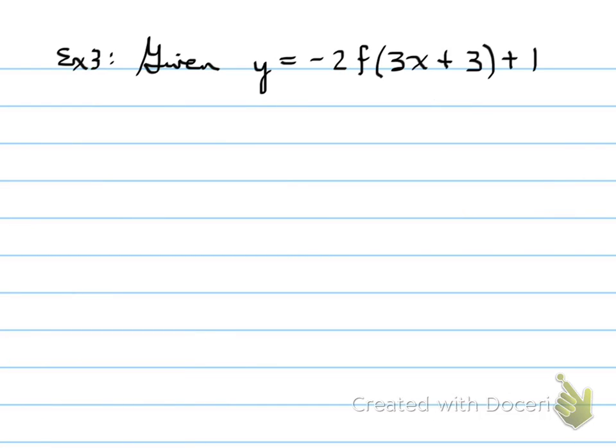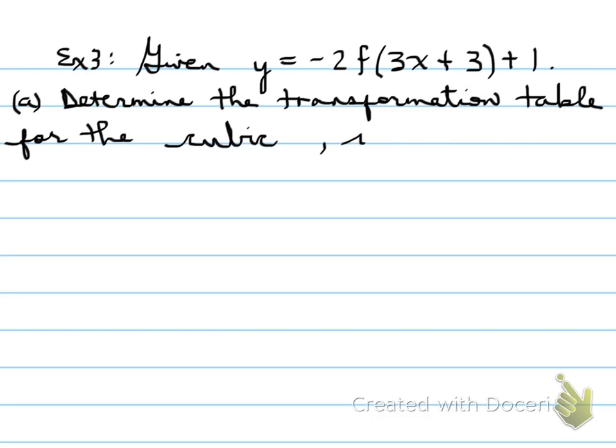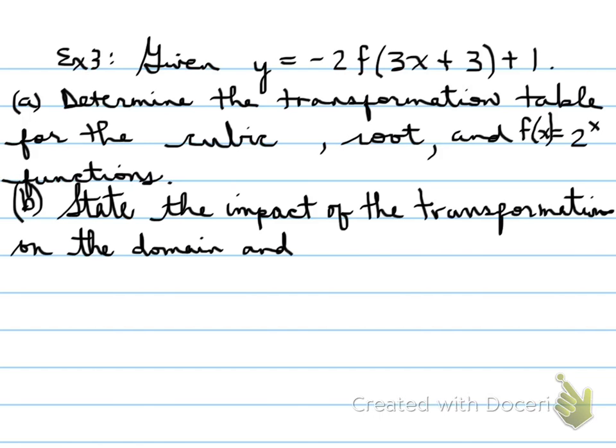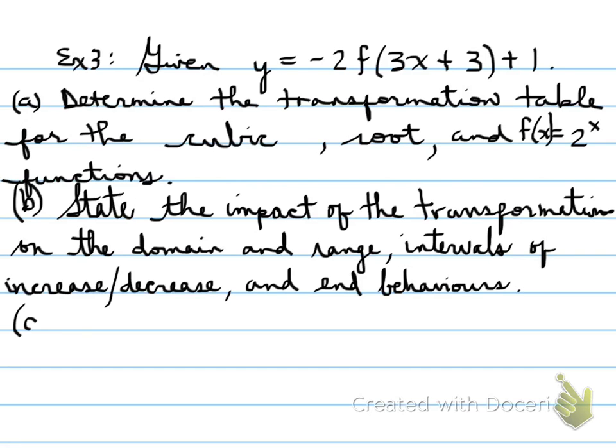Given y equals -3f(3x + 3) + 1, determine the transformation table for the cubic, root, and exponential function f(x) equals 2^x. You're asked also to state the impact of the transformations on the domain and range, the intervals of increase and decrease, and end behaviors.